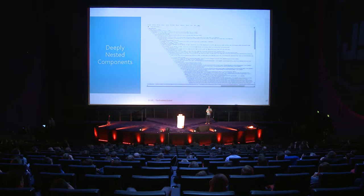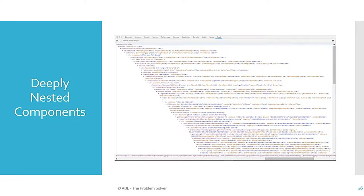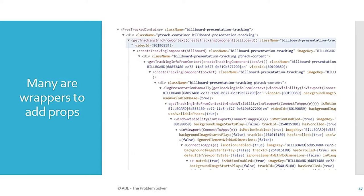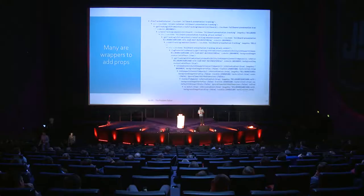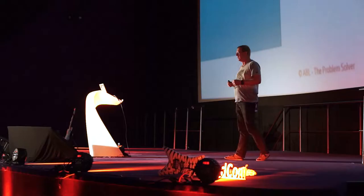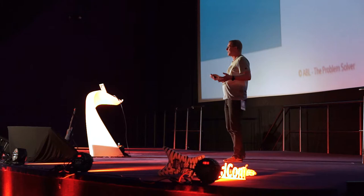And then there is the problem of: if your only tool is a hammer, every problem is a nail. I've got a little component stack from a popular public website. If you look at it — some kind of container rendering get-tracking-info from context, renders a create-tracking component, a billboard, log presentation, wrapping get-tracking-info from context again, wrapping window-visibility, wrapping in-viewport, wrapping connect-to-app. How many wrappers can you add? If you want to add something to your component stack, you basically have to add it using a component, because that's the one building block we have.